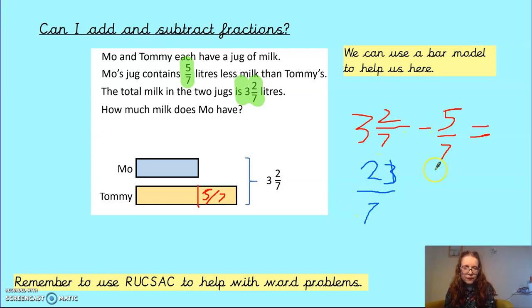So I've got 23 over 7, take away 5 over 7, and that's going to give me 18 7ths. So now I know that this bit is 18 7ths.